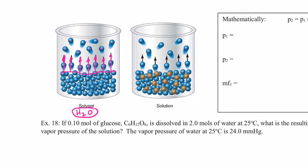Now what if I change that to a solution — water with sugar added, let's say 10% sugar? What's at the surface of my liquid now? We have water molecules at the surface, but we also have sugar molecules at the surface. There are a lot of water molecules, but a sugar molecule now takes the place of what used to be a pure water molecule.